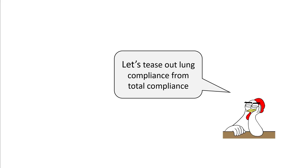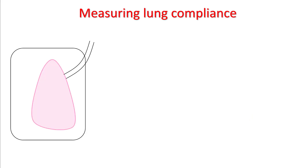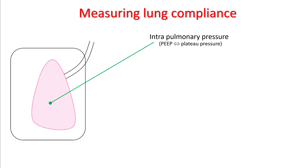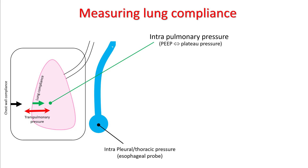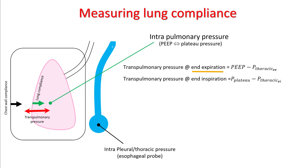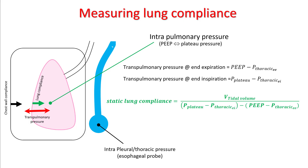To differentiate the lung compliance from the total compliance, you have to measure intrapleural pressures. The pressures on the ventilator are intrapulmonary pressures, which range from PEEP at end-expiration to plateau pressure at end-inspiration after an end-inspiratory pause, and these pressures constitute pressure against lung compliance and chest wall compliance. So if we were to know the intrapleural pressure, we should be able to tease out the lung compliance component by using transpulmonary pressure. For this, you have to use an esophageal probe to measure the intrathoracic pressure, which corresponds approximately to intrapleural pressure.